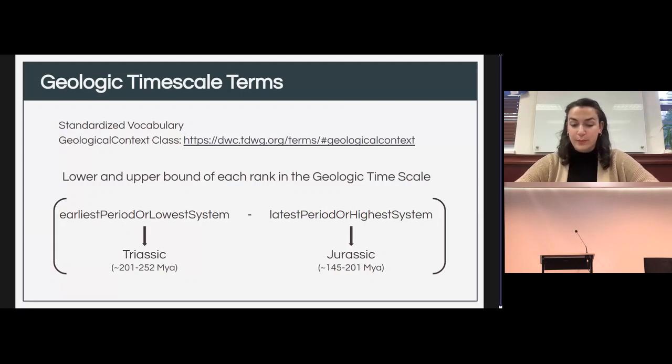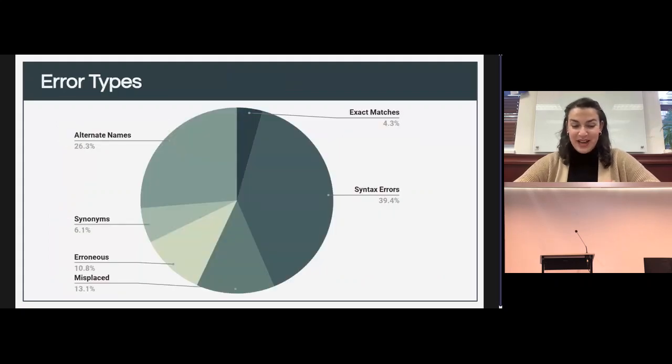All data points could be mapped into one of these six categories, including terms that were an exact match to a term in the controlled vocabulary without any uncategorized outliers or inconsistencies unaccounted for.